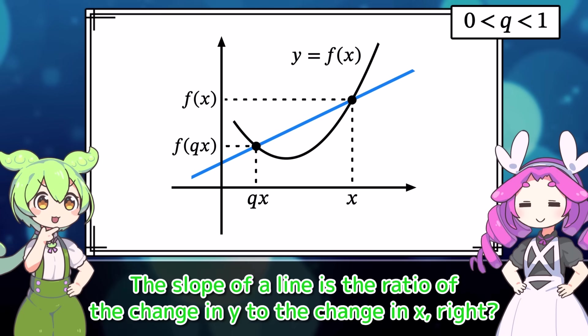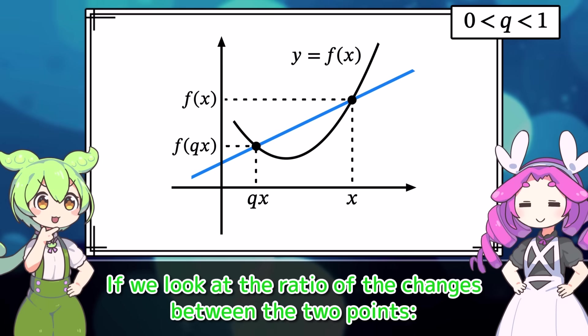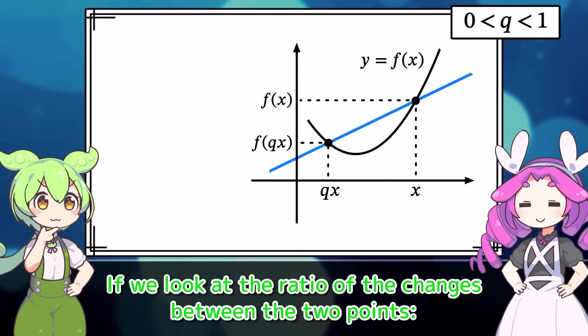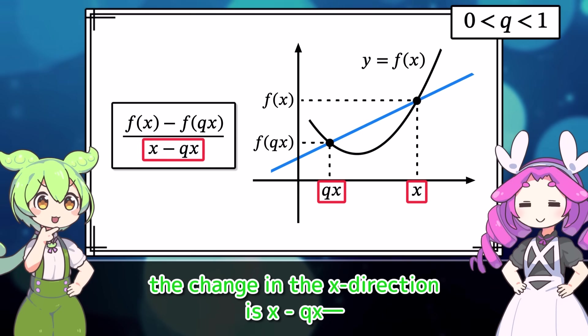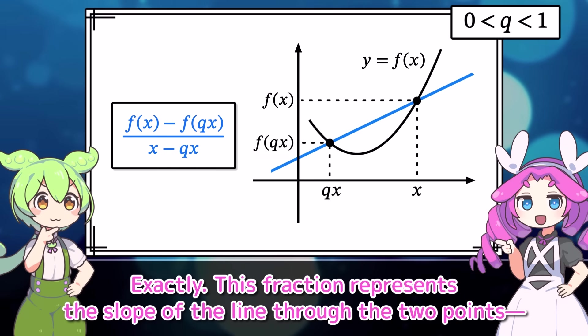Since Q is less than 1, Qx is closer to the origin than x. Okay, let's draw a line passing through these two points. Then, what would be the slope of this line? The slope of the line is the ratio of the change in y to the change in x, right?